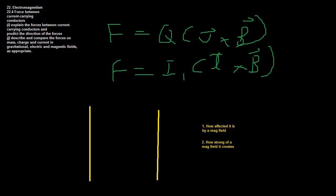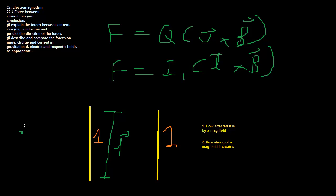For wire 1, the force equals I₁ times the exposed length — only the length exposed to the other wire experiences the attraction, and more exposure means more force. We then multiply by the magnetic field of wire 2. The magnetic field of a wire was described previously as B = μ₀I/2πr, where the only variable is the current I₂ of wire 2.